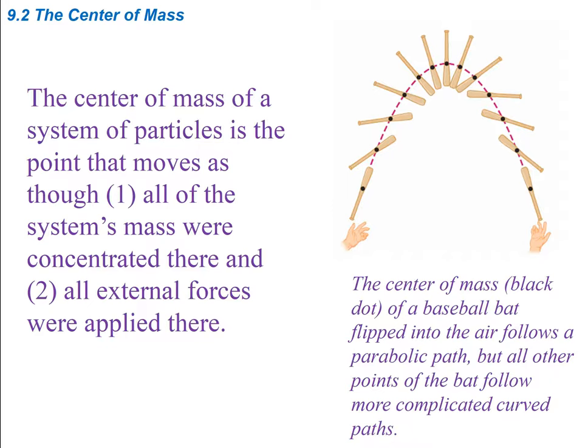The picture here shows the center of mass, which is the black dot, of a baseball bat flipped into the air, which follows a parabolic path. But all other points of the bat follow more complicated paths. As we throw it up, the center of mass follows the parabolic path that we would expect to see.